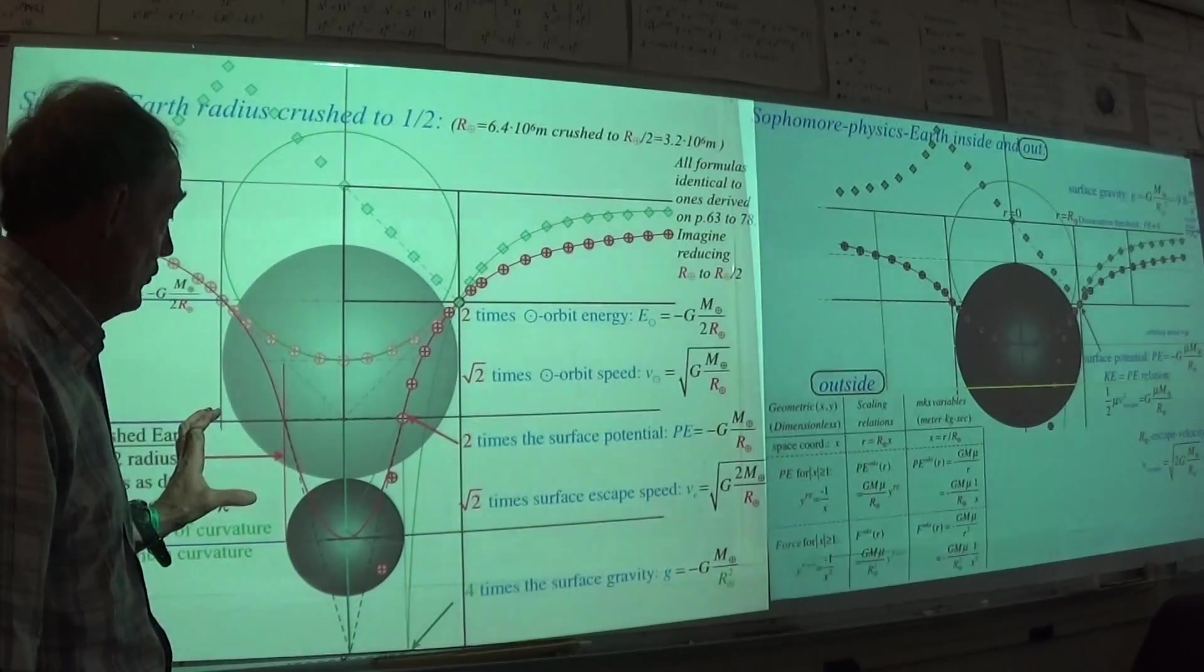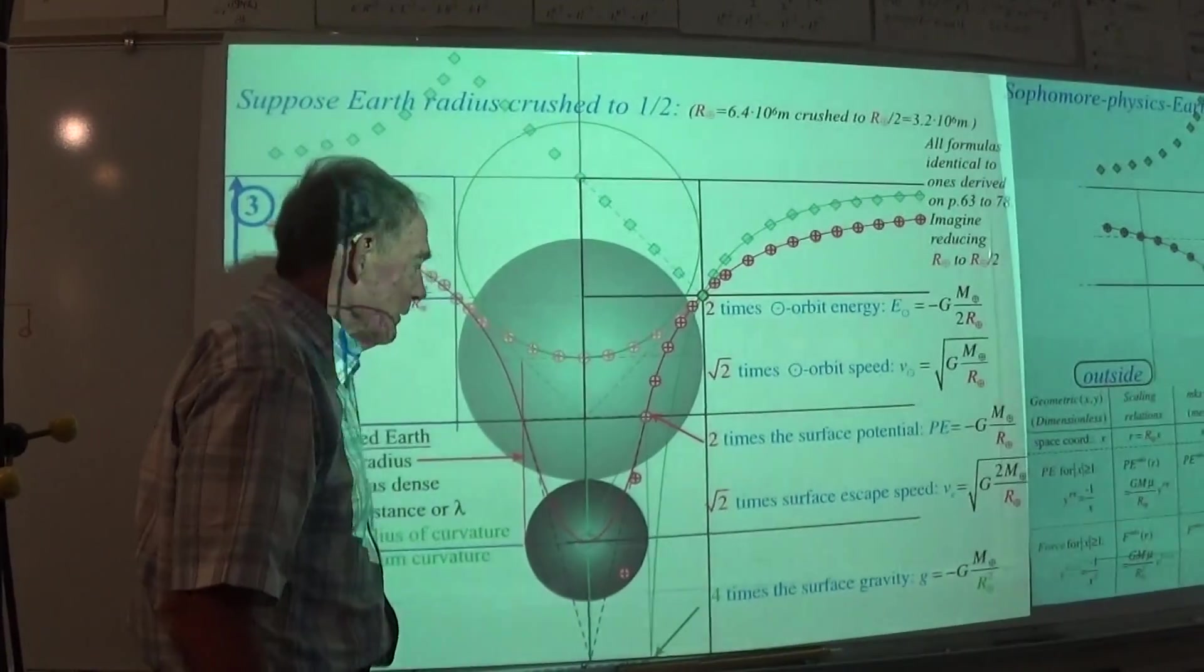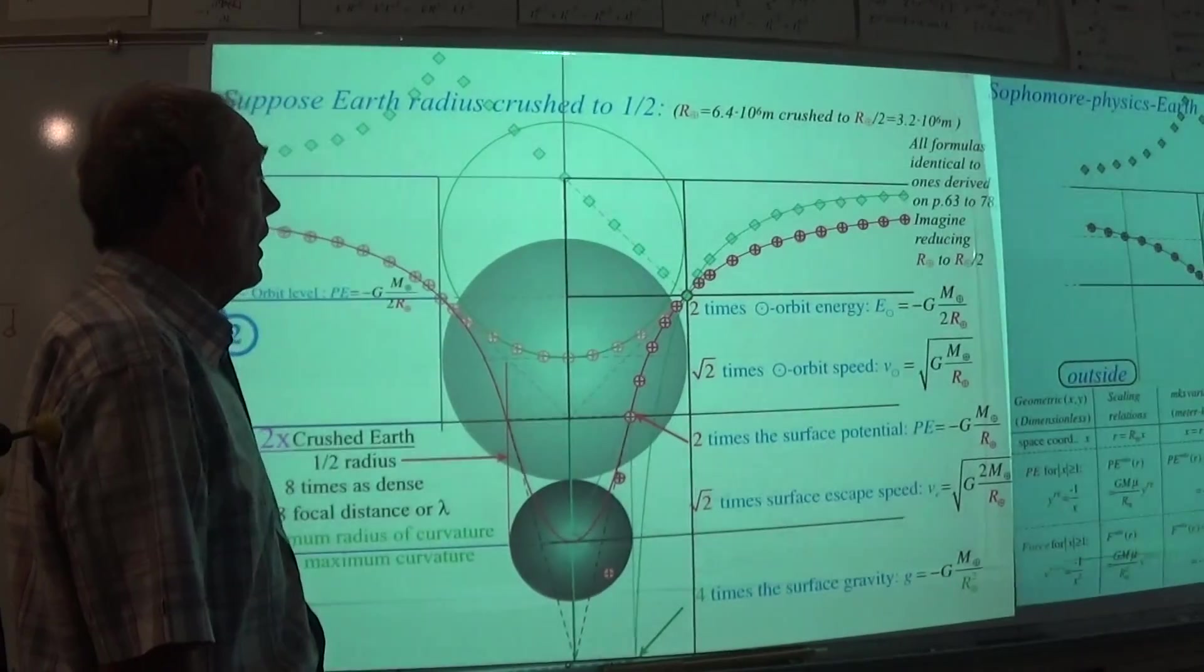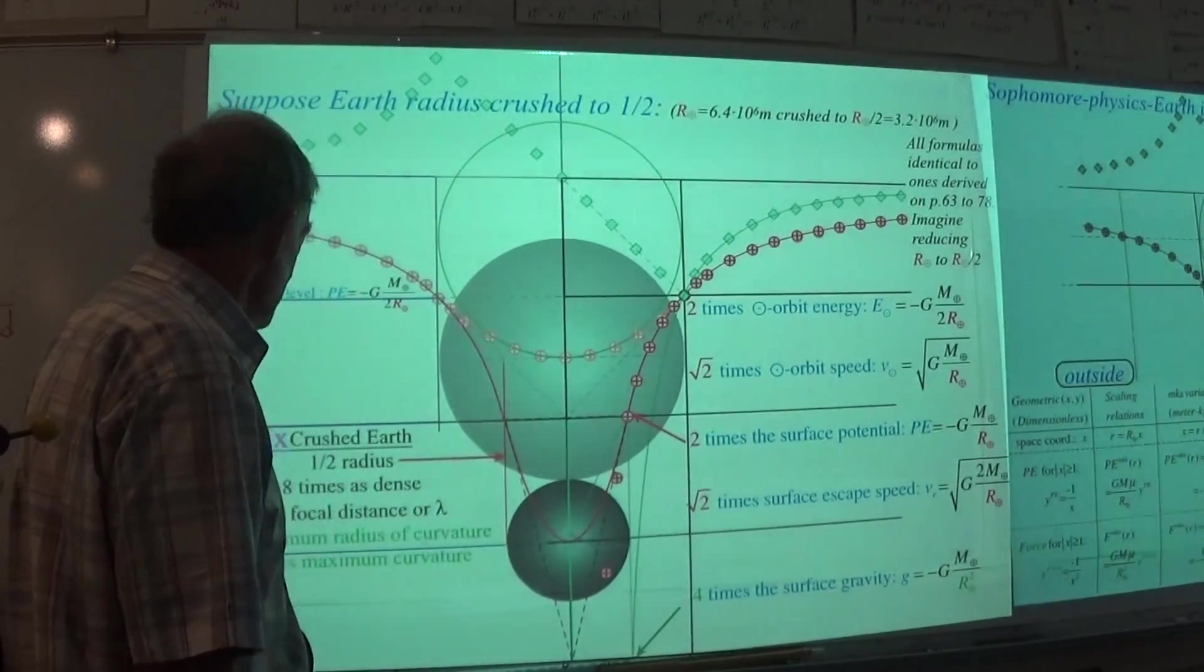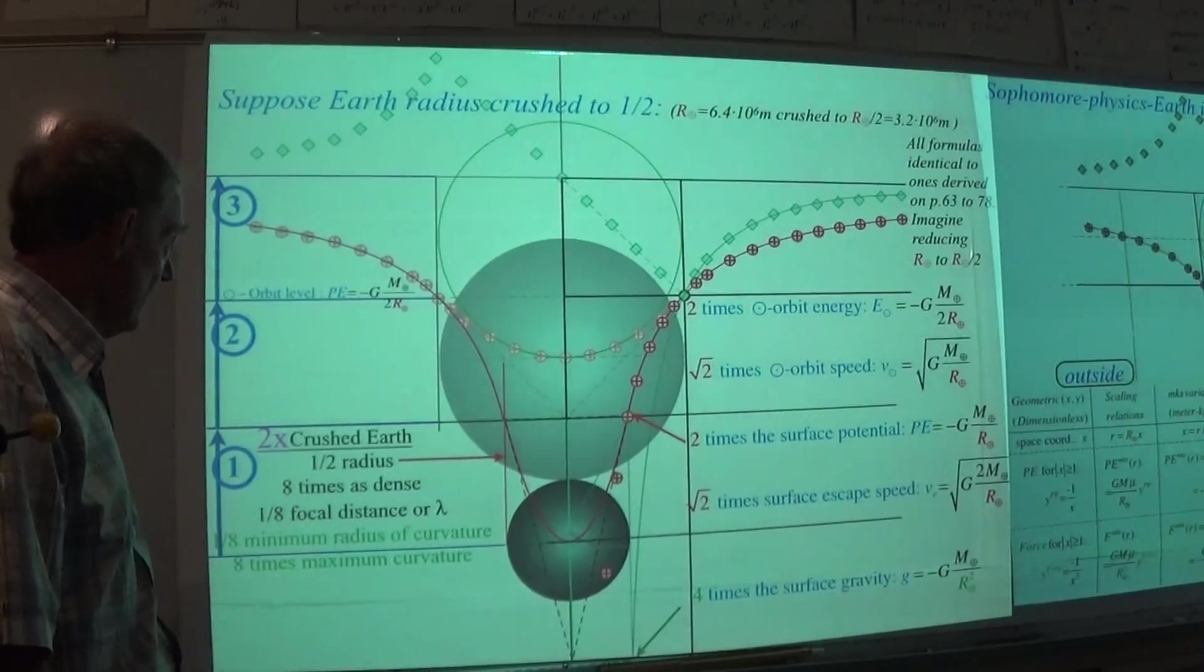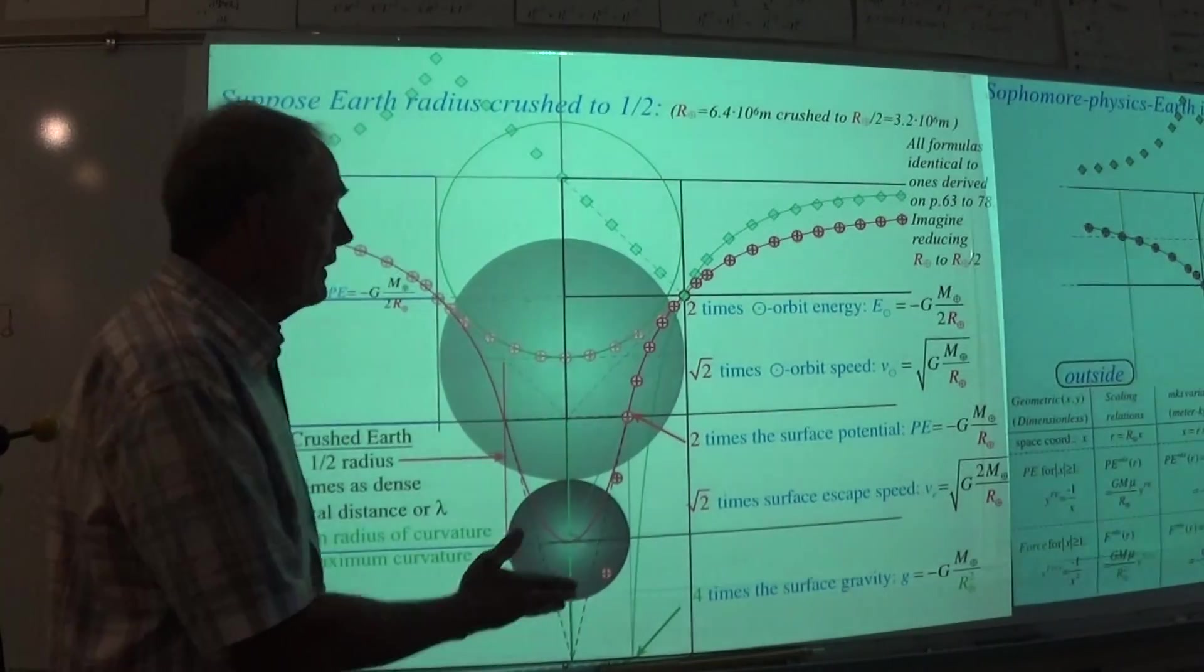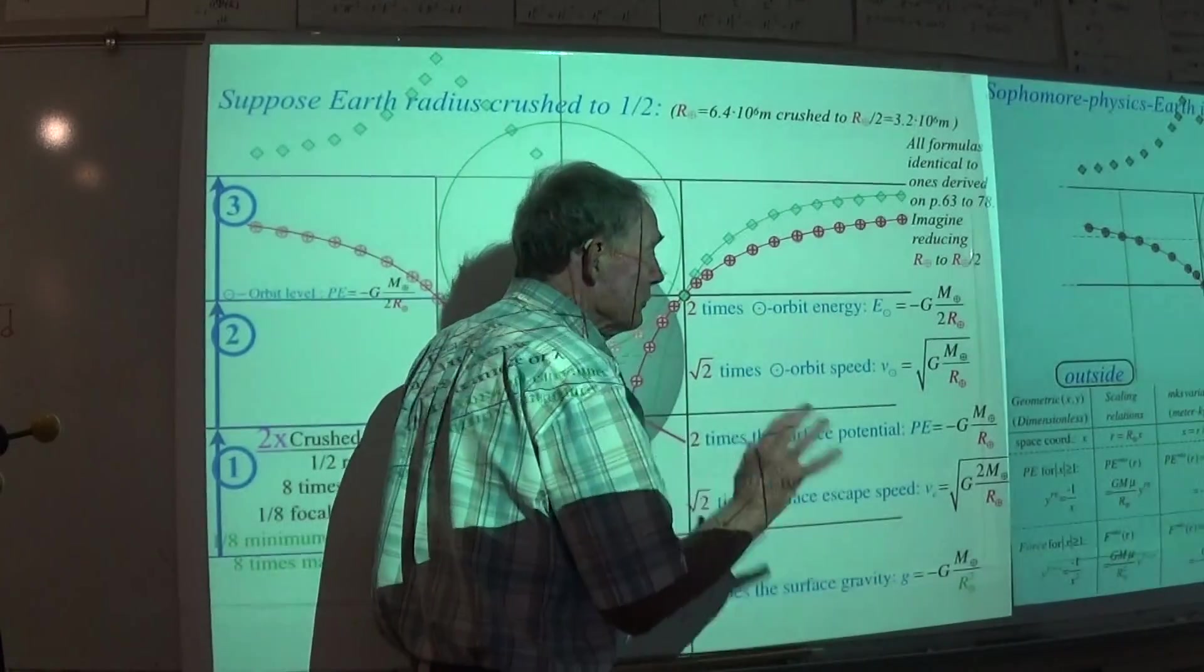We've got surface escapes, all that stuff is already there. Now, if you crush, if you crush the earth, make it more dense somehow, say you bring it to this point here where you have got half the radius, eight times the density, one-eighth focal distance, all of the scale factors that apply to each of the formulas.